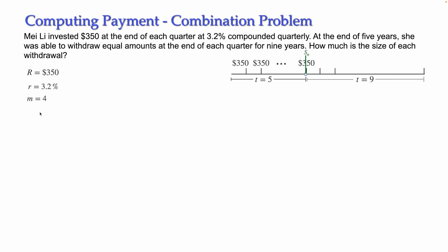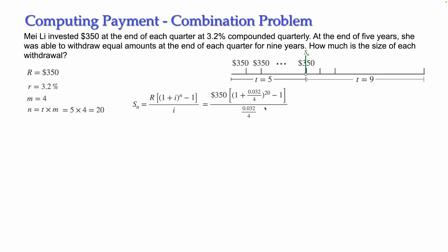Now let's compute the number of payments. The number of payments equals t times the number of payments per year, which equals the number of compounding periods per year. So it is 5 years multiplied by 4, which equals 20. This n = 20 will be used in the future value formula. R is the periodic payment of $350, i is 0.032 divided by 4, and n is 20.